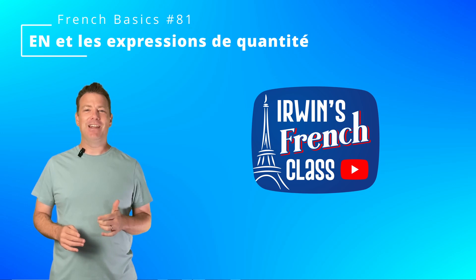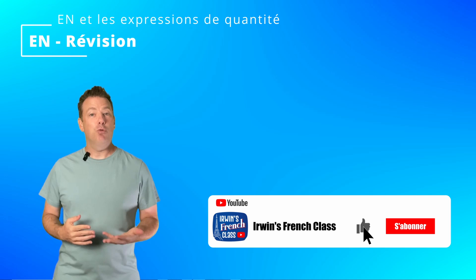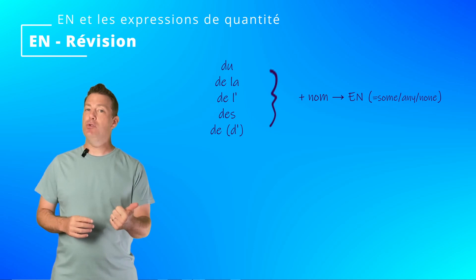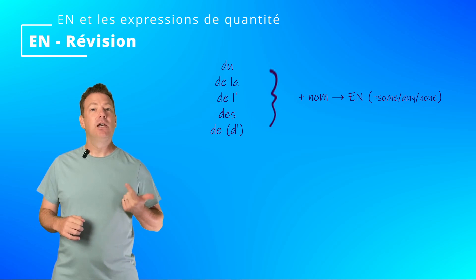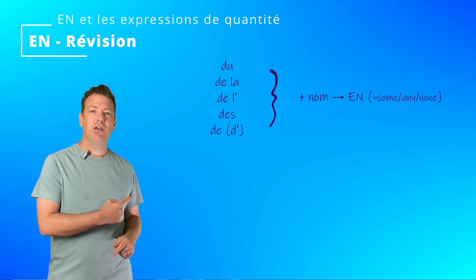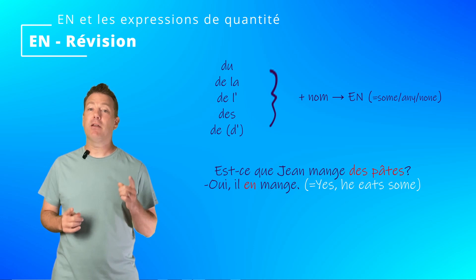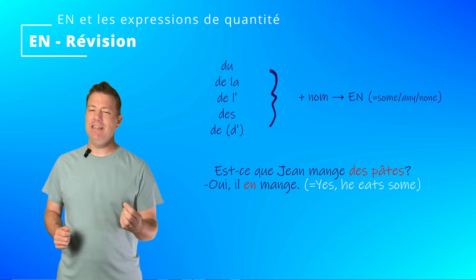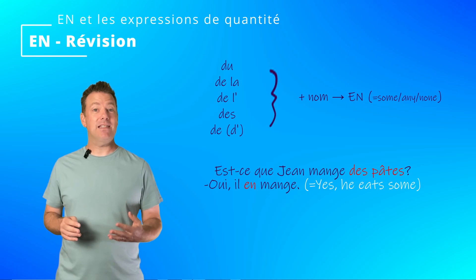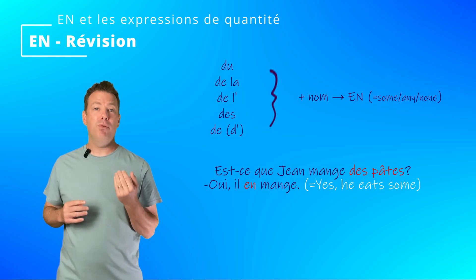C'est parti! In the previous video, we said that the pronom EN replaces a direct object introduced by the articles DU, DE and L' if the noun starts with a vowel, DE LA, DES, and the negative DE. Par exemple, est-ce que Jean mange des pâtes? The answer could be: oui, il en mange. Here we use the EN pronoun to avoid repetition of the noun 'pâtes', which is the COD introduced by the article DES. In this example, there is no clear indication about the quantity of pasta Jean ate.